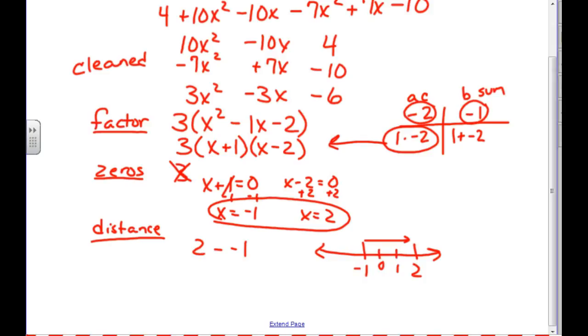0, 1, and 2. It goes 1, 2, 3. The answer is 3. The distance between the two points is 3. The distance between those two zeros is 3.